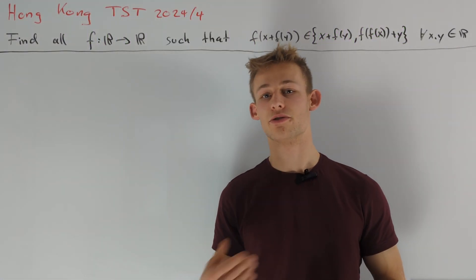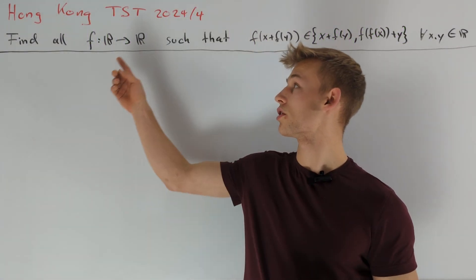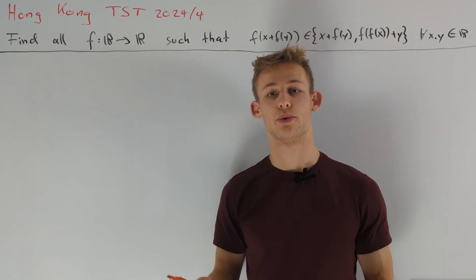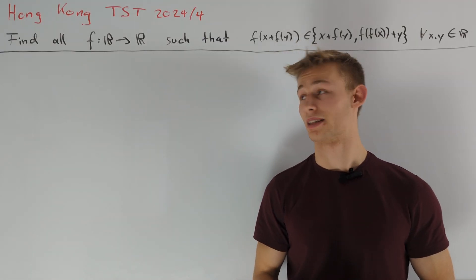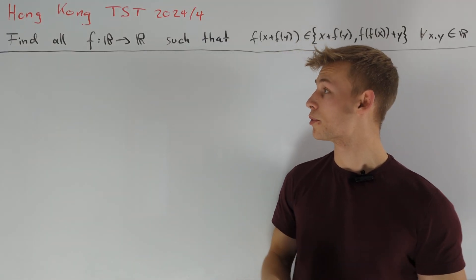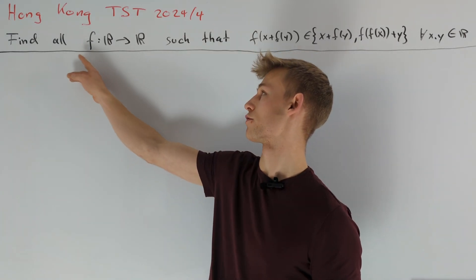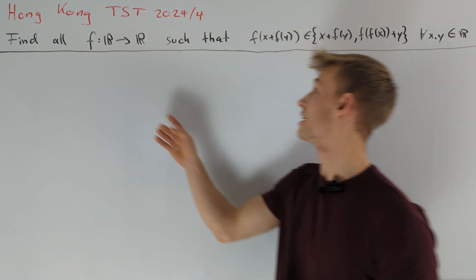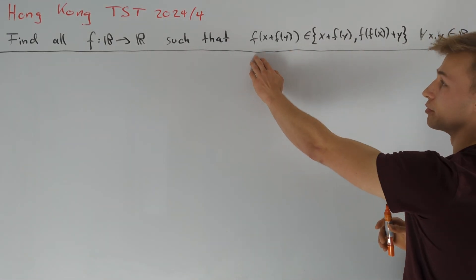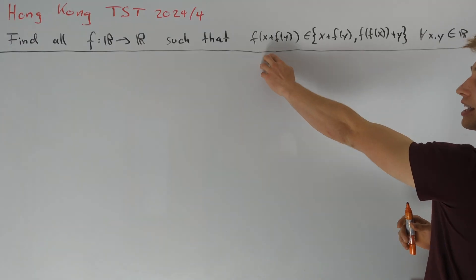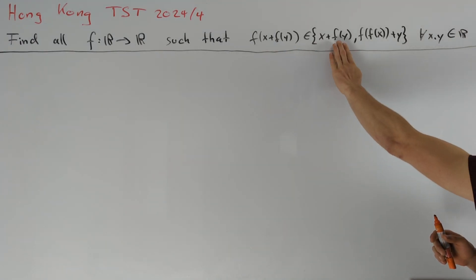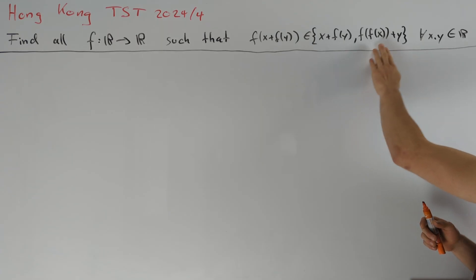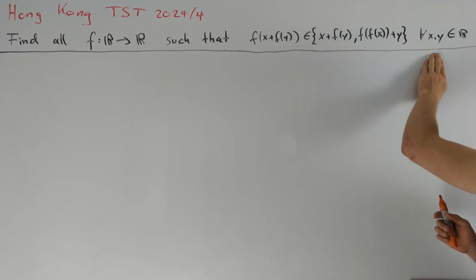Hey guys, today I want to present a solution to Hong Kong Team Selection Test 2024 Problem 4. Let's take a look at the problem statement. We are asked to find all functions from the real numbers to the real numbers such that f(x + f(y)) is either equal to x + f(y) or equal to f(f(x) + y) for all x and y in R.